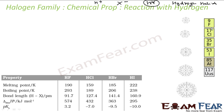All halogens — fluorine, chlorine, bromine, iodine — react with hydrogen to form hydrogen halide. This affinity for hydrogen actually decreases down the group, because the tendency to form X⁻ also decreases down the group. So the affinity to react with hydrogen also decreases down the group.